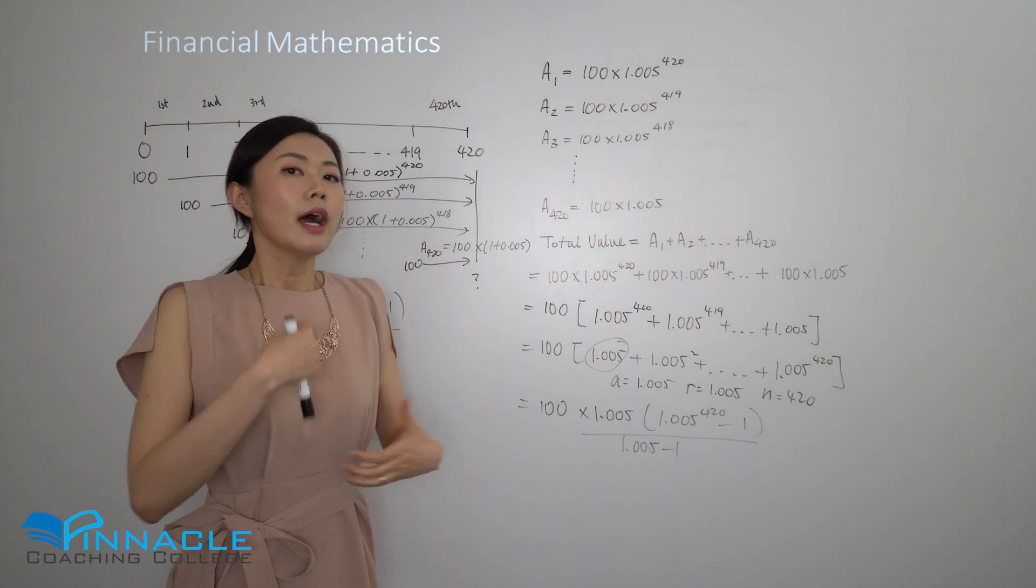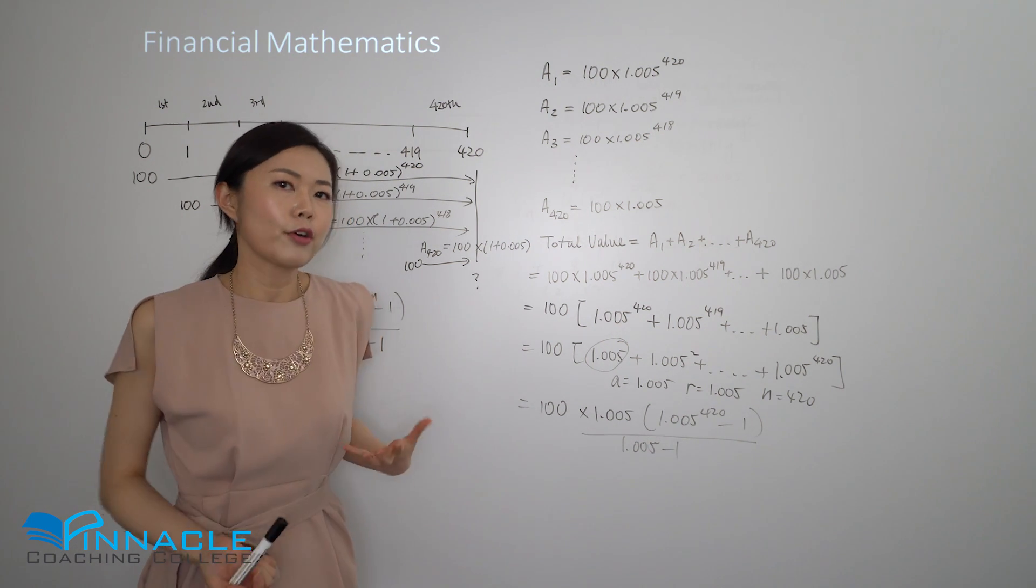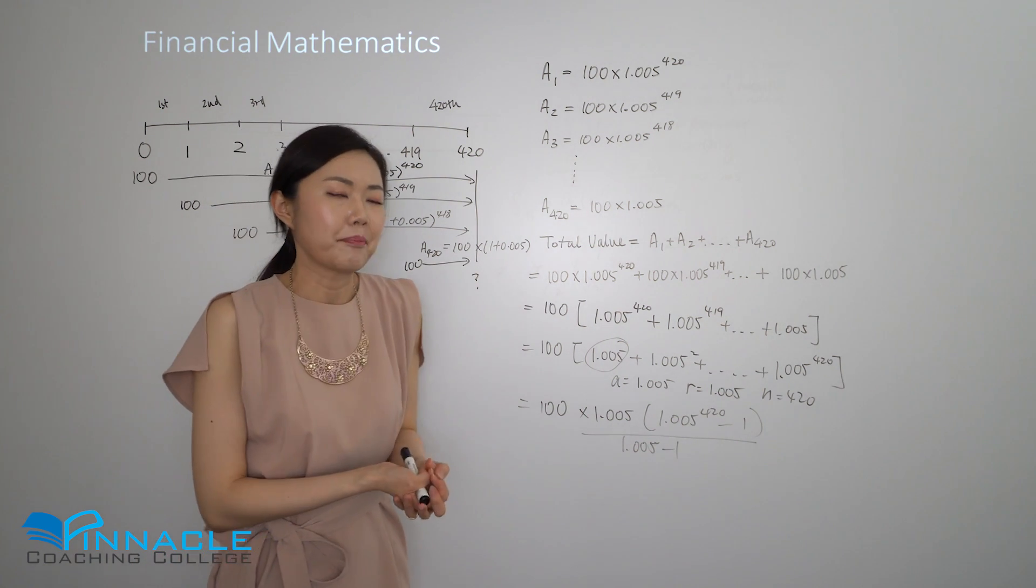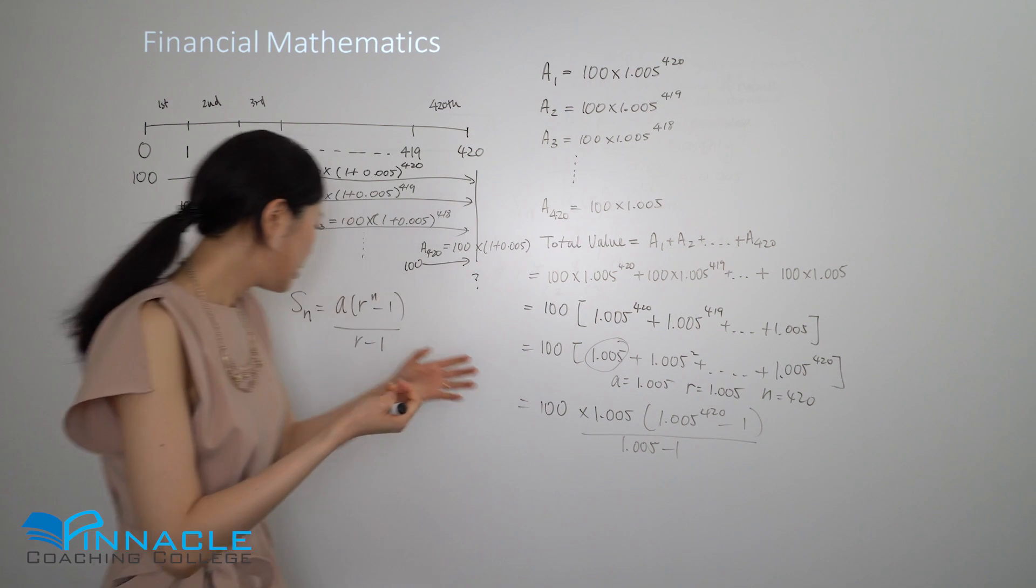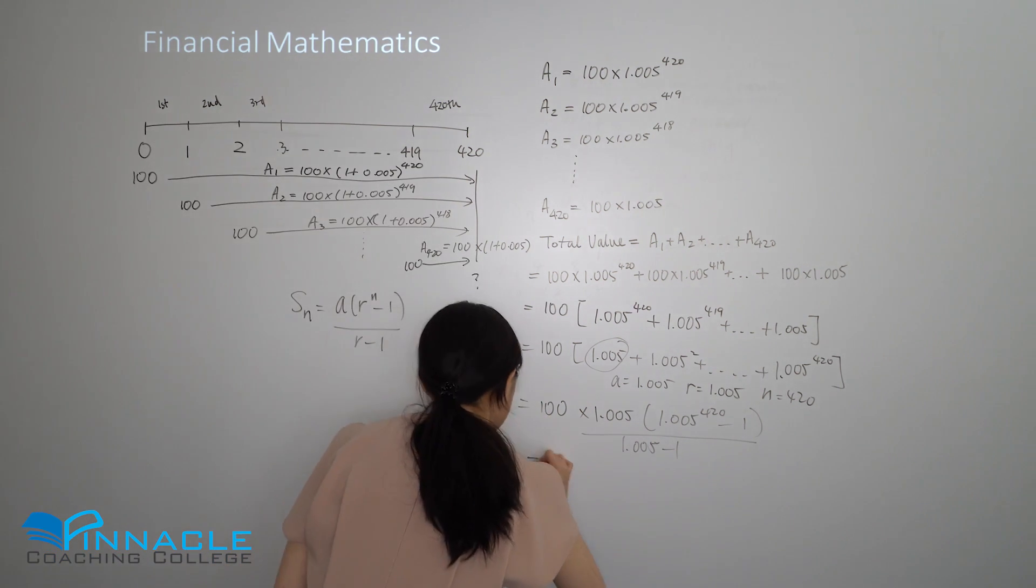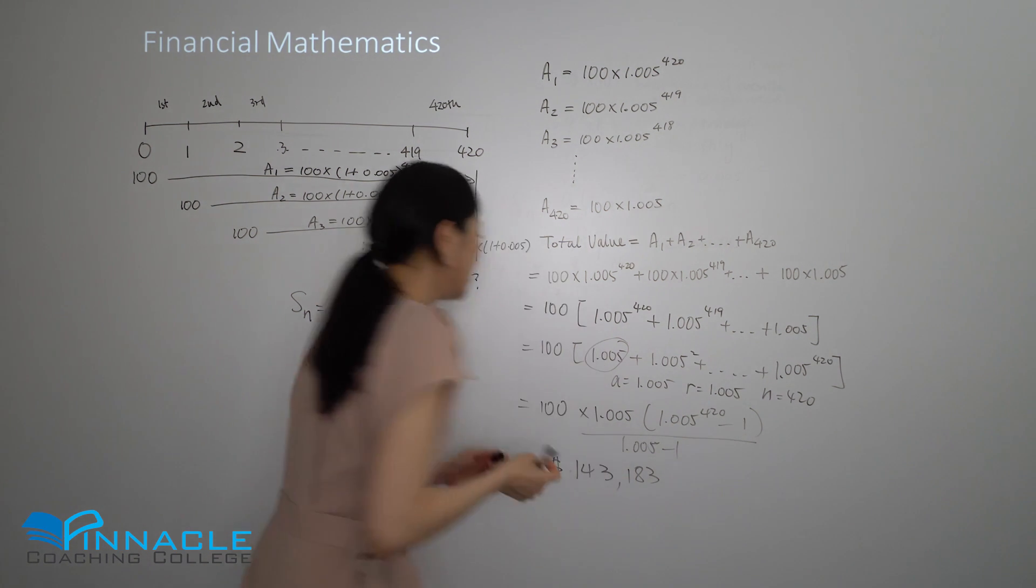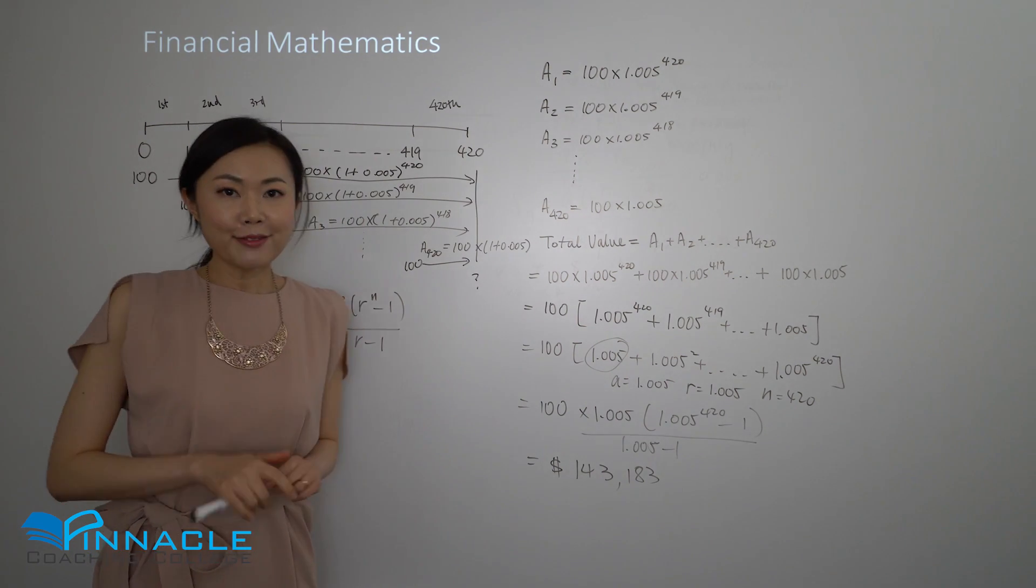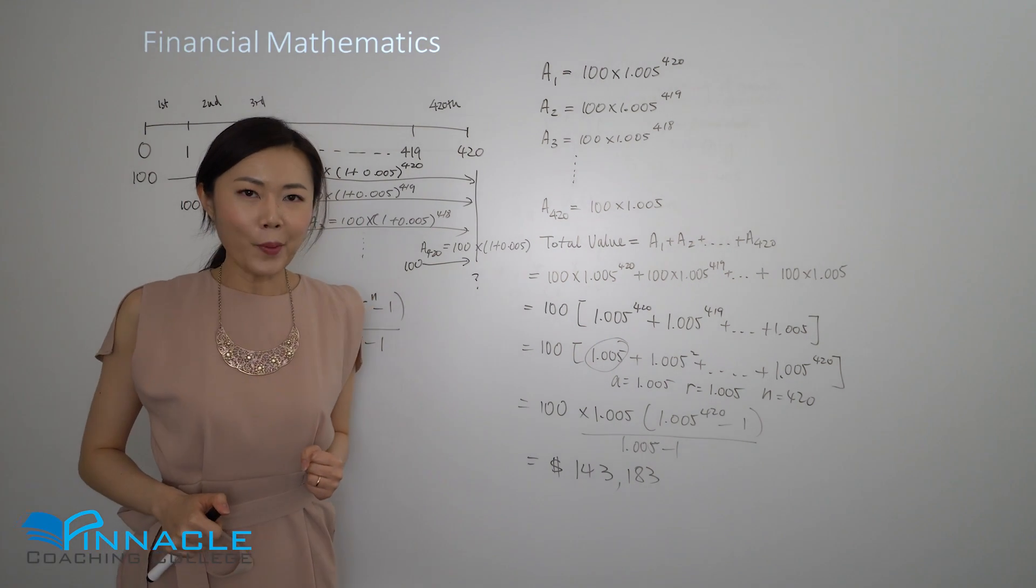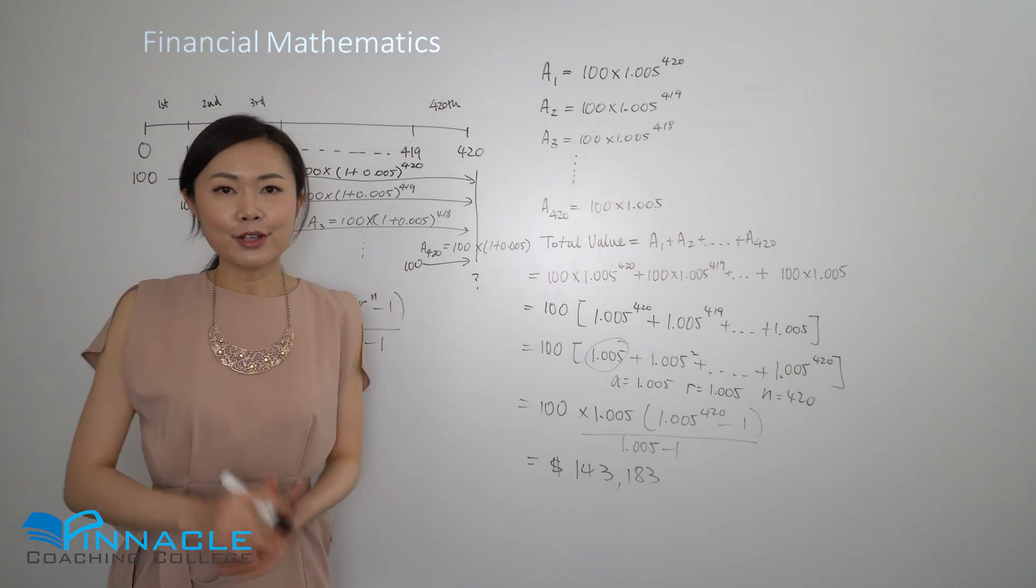Now all you have to do is put this into the calculator. Just be careful, double-check your input. I've seen a lot of common mistakes where you miss a zero or get the decimal wrong. You put that into the calculator, you should get 143,183. The answer isn't in the question, so you should know that you've got it correct, and that's it, that's the first part done.